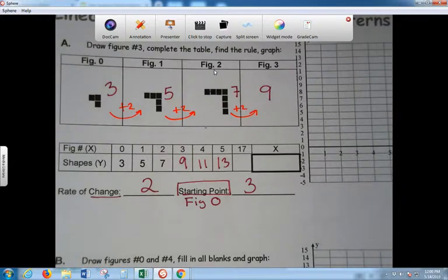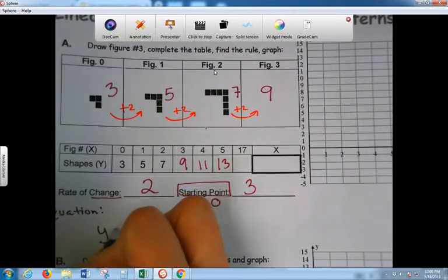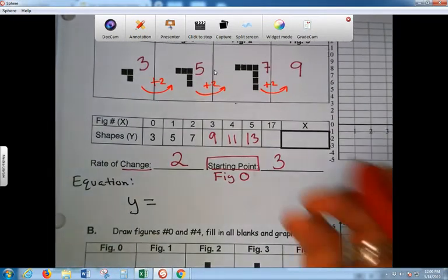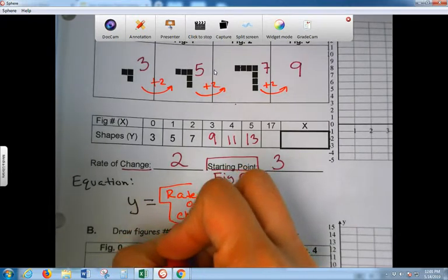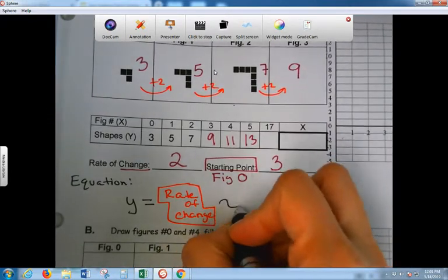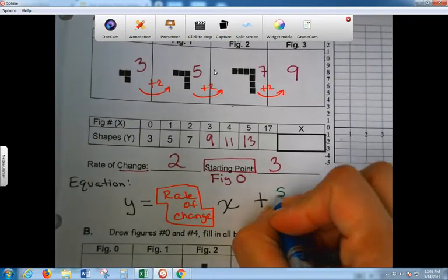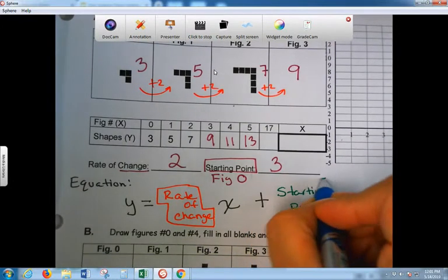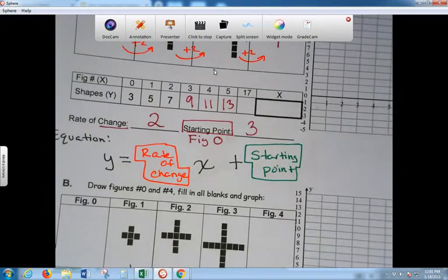Now we're going to write the equation. We're going to start with y equals. The way you set it up is you're going to have your rate of change X plus starting point. This is how our equation is going to be written. You're always going to have y equals, and then this number is whatever this number is. So the rate of change is whatever the number is, then you're going to have an X, then you're going to have a plus sign, and at the very end is your starting point.